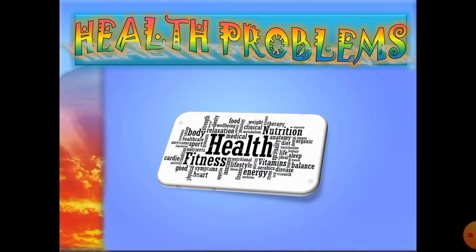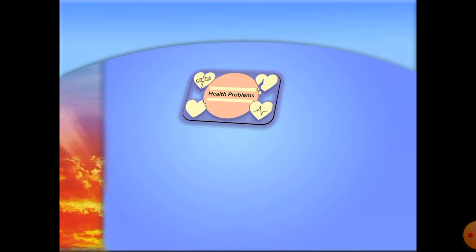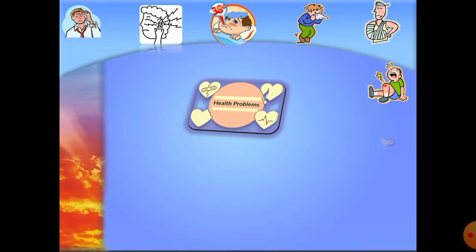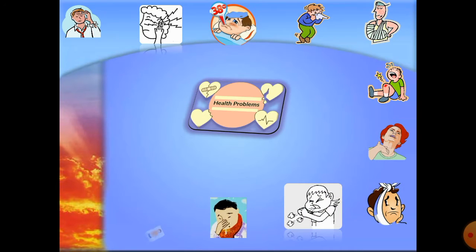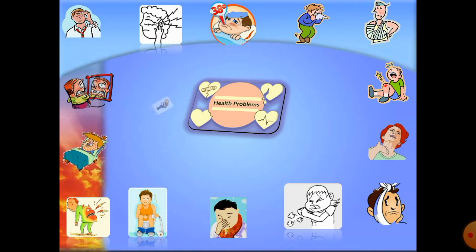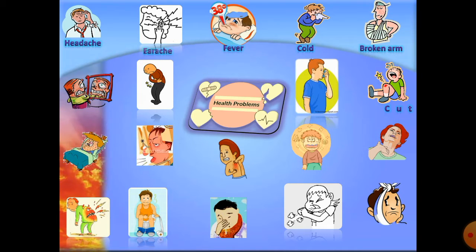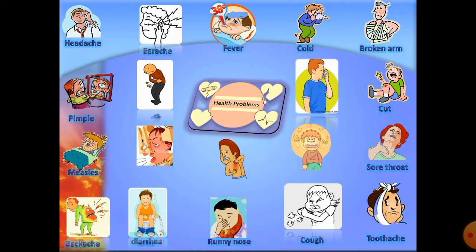First, we're going to name a few health problems. We have a lot of them but we are going to limit ourselves to these — I hope that you can remember these maybe 20 health problems. Number one: headache, earache, fever, cold, broken arm, cut, sore throat, toothache, cough, runny nose, diarrhea, backache, measles, pimple, stomachache, asthma, dizziness, rash, stuffy nose.